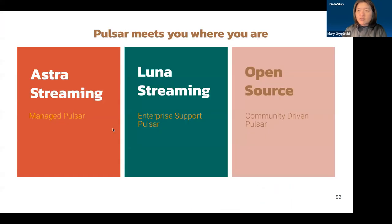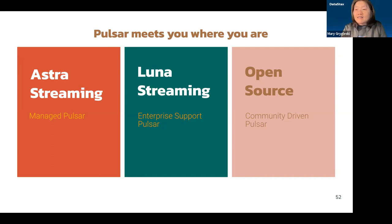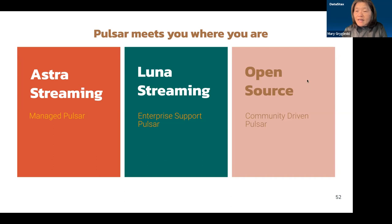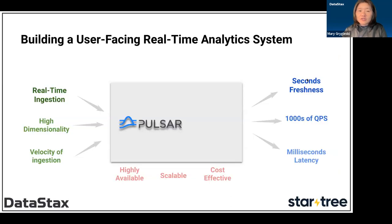DataStax offers Astra Streaming — Pulsar already managed in the cloud — with a $25 monthly credit or $300 a year, making it easy to test. There's also Luna Streaming for enterprise support and open-source options. If you want to try it, sign up at Astra.datastax.com for a free account.